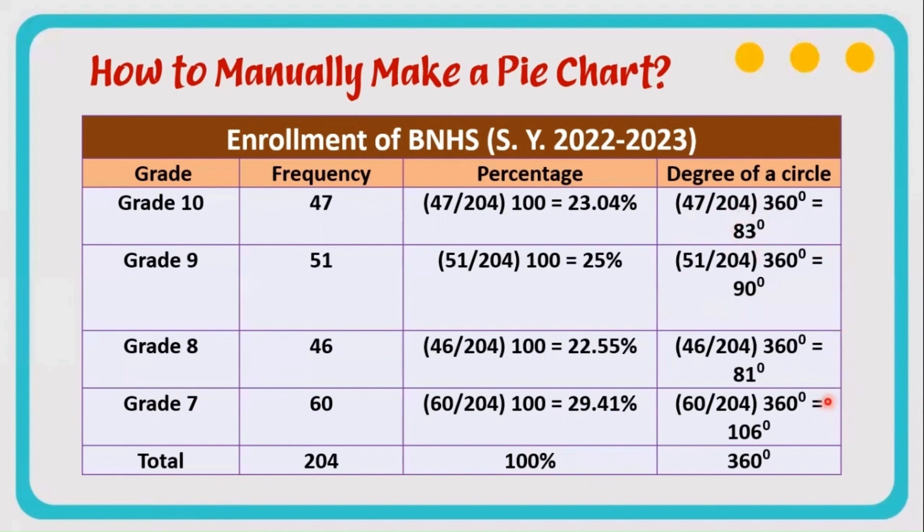Follow the same process until you finish all the grade levels, and be sure that we'll come up with a total of 360. Now that we have this, we can manually make the circle and divide the circle with the correct degrees using a protractor.